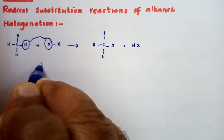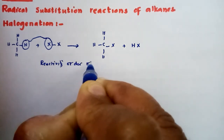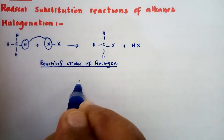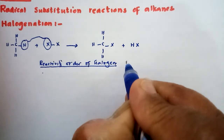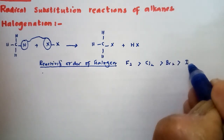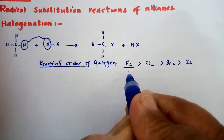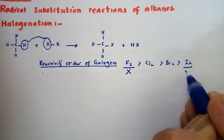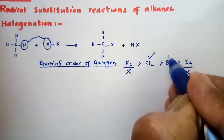The Reactivity Order of the Halogens — which halogen reacts with alkane at the fastest rate and which reacts at the slowest rate. The reactivity order is: most reactive is Fluorine, then Chlorine, then Bromine, and least reactive is Iodine. Because fluorine's reactivity is highest, the reaction is difficult to control, so fluorination is not carried out. And the reaction with iodine is very slow, so that reaction is also not done.